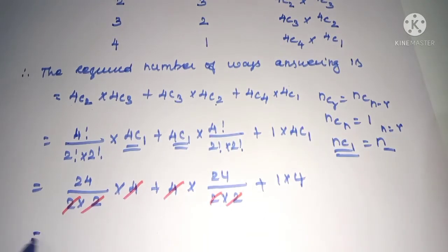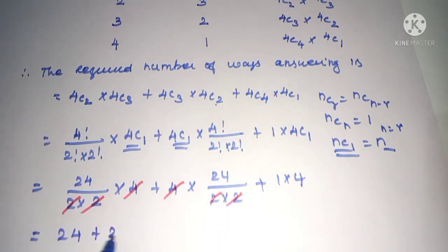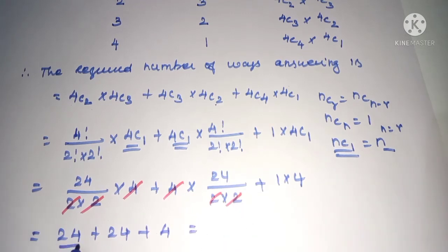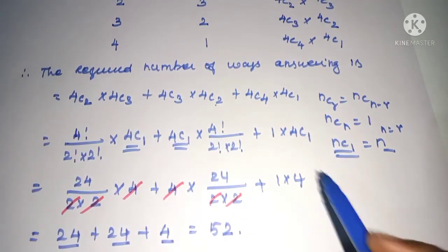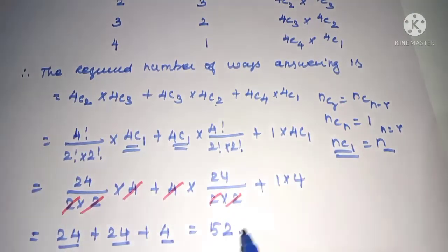We get 24 plus 24 plus 4. Total number: 24 plus 24 equals 48, plus 4 equals 52 ways. So there are 52 ways to answer at least 2 questions from Part A. Thank you.